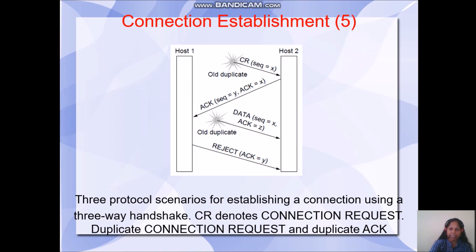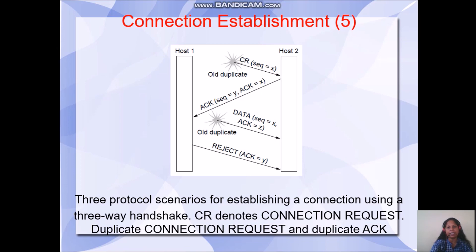Next is the case of a delayed connection request and delayed data. When a connection request reaches host2, as usual it sends an acknowledgement. Host2 is waiting for some data. A data segment arrives carrying sequence number X and acknowledgement Z. But host2 is not waiting for any acknowledgement carrying sequence number Z, so it will understand that it is a delayed duplicate. Also, host1 on receiving an acknowledgement carrying sequence equal to Y will reject the connection. With the help of sequence numbers, host1 and host2 can easily identify a delayed duplicate and reject the connection request.